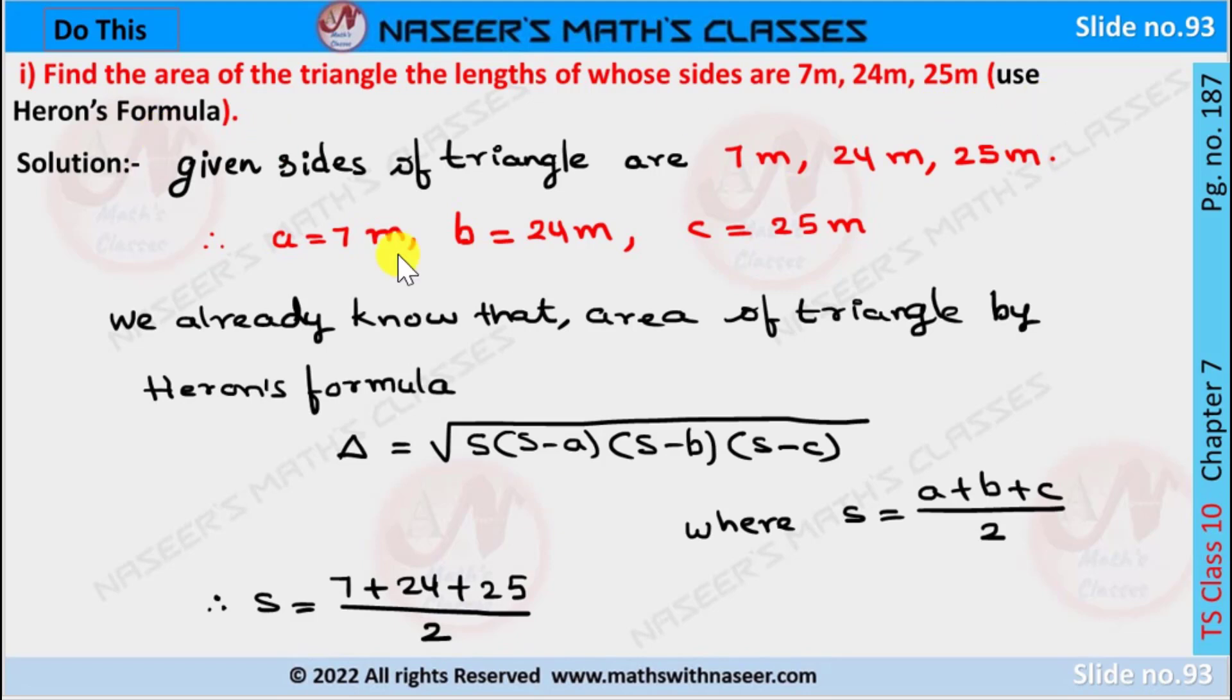Use Heron's formula. Given the sides of the triangle are 7 meters, 24 meters, and 25 meters. Let A equal 7 meters, B equal 24 meters, and C equal 25 meters.